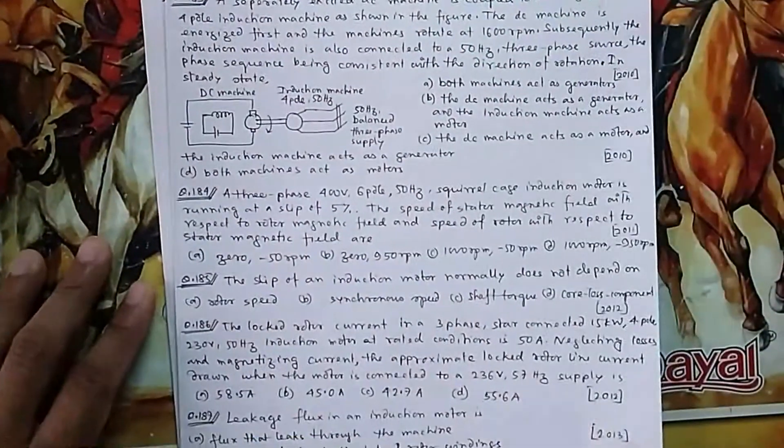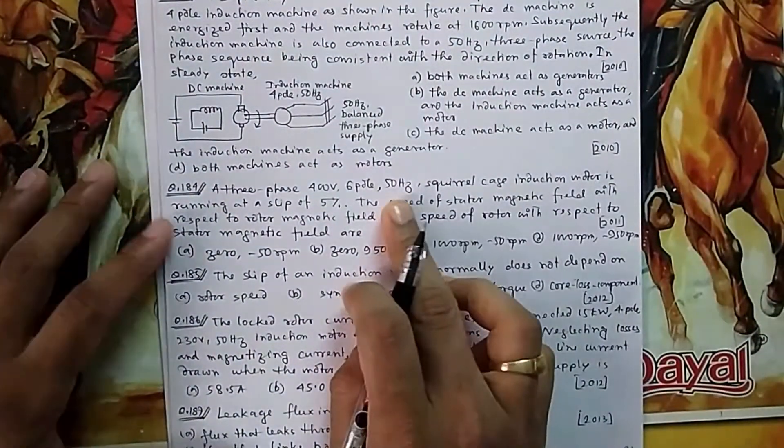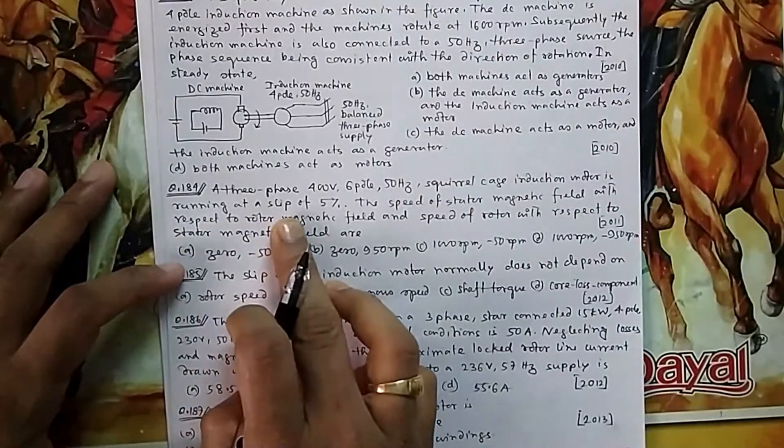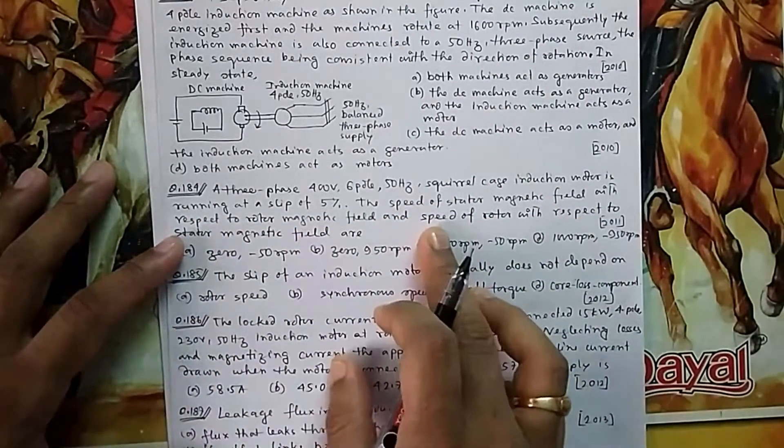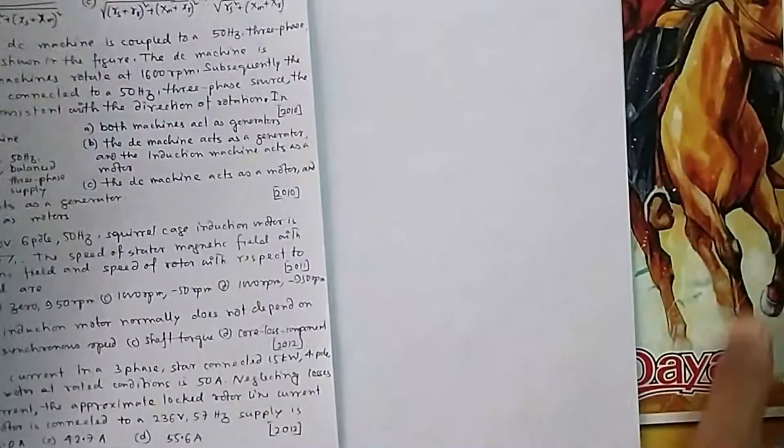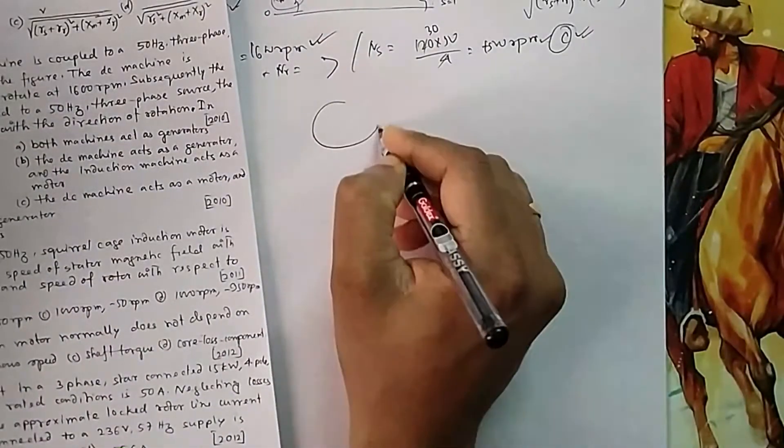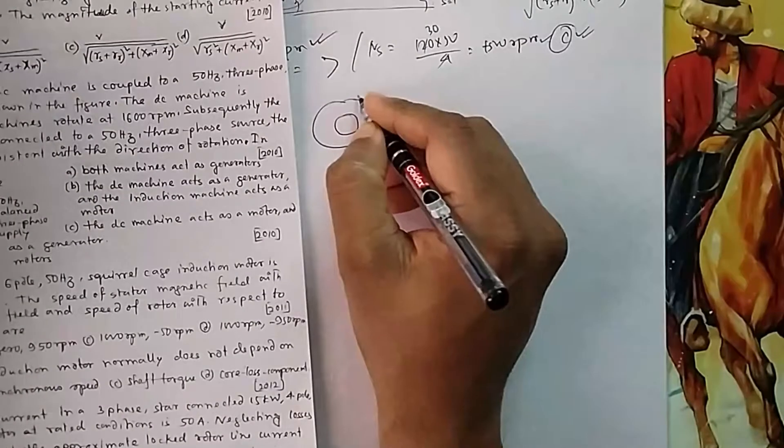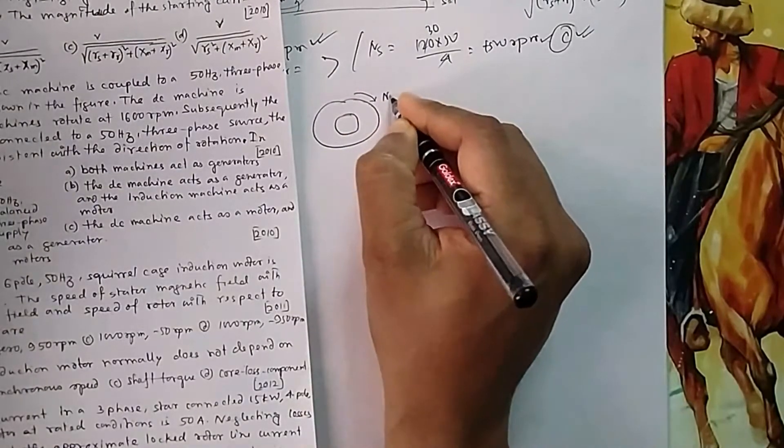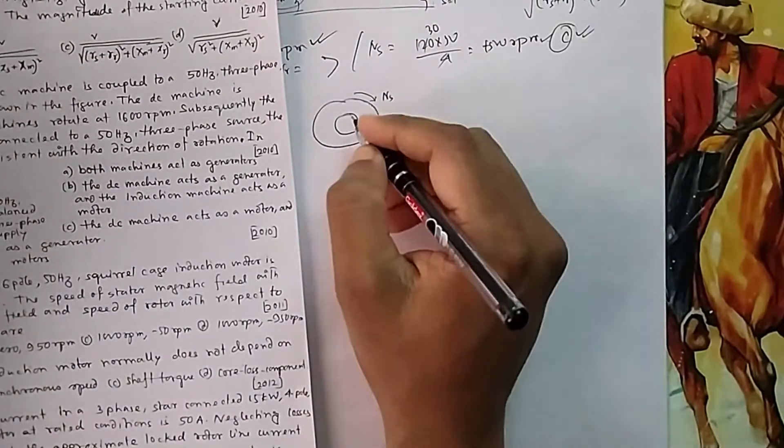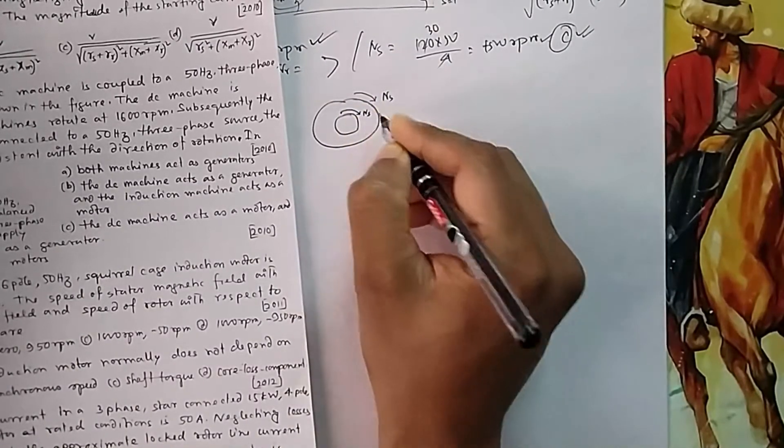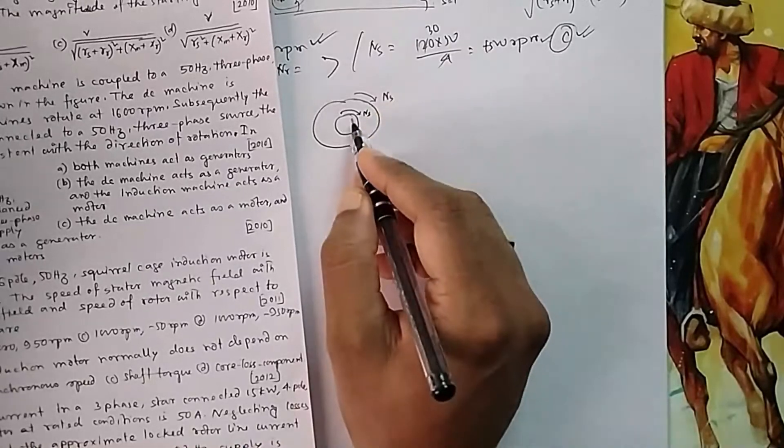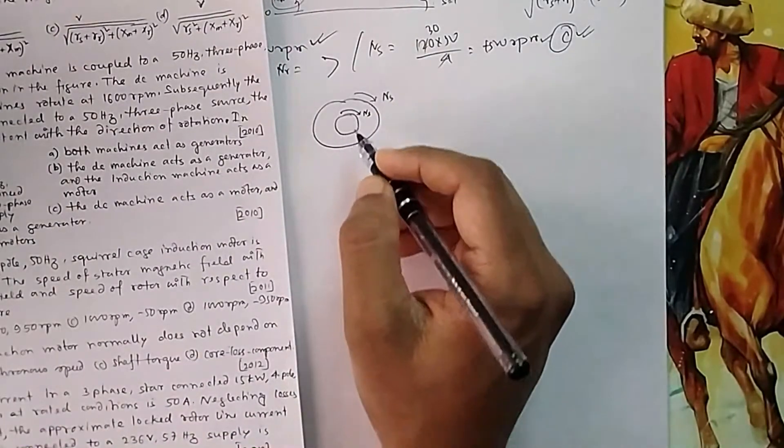Question 184: A three-phase 400 volt, 6-pole, 50 Hz squirrel cage induction motor running at 5% slip. The speed of stator magnetic field with respect to rotor magnetic field. In induction machine, if you give supply to stator, stator magnetic field rotates in this direction. Due to which, the rotor magnetic field also tries to rotate in this direction.